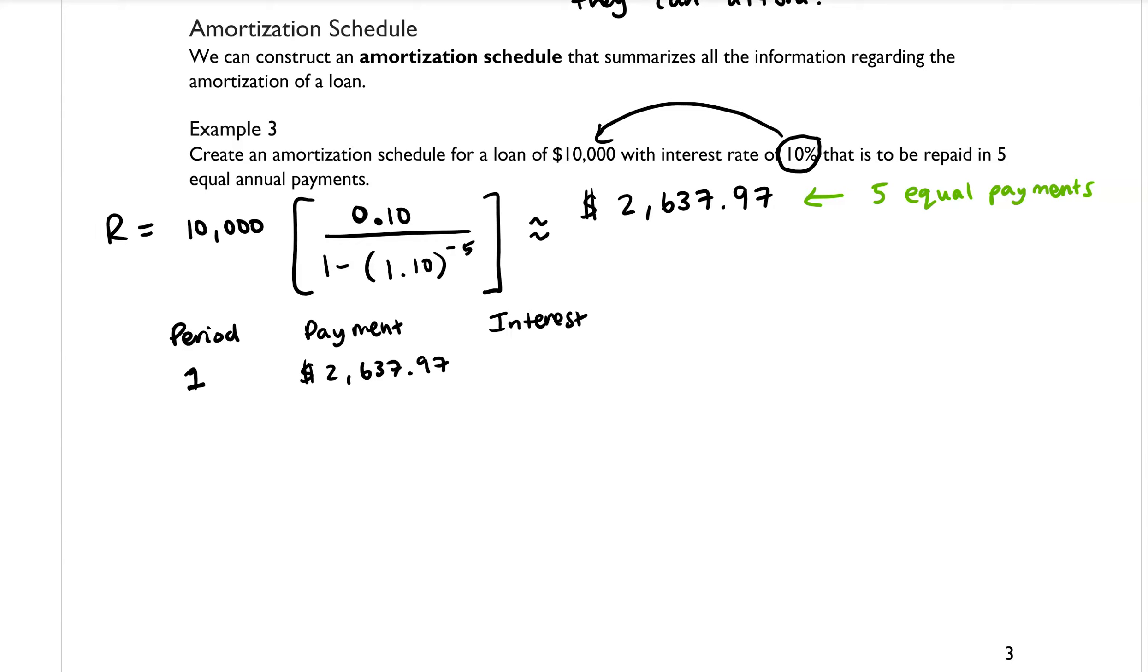So 10% of $10,000 is equal to $1,000. So the interest for the first payment period would be $1,000. And then depending on what kind of amortization schedule you're looking at, sometimes you'll see it say principal in this column, and your textbook calls it the balance reduction. So it just depends on where you're looking or who you're talking to.